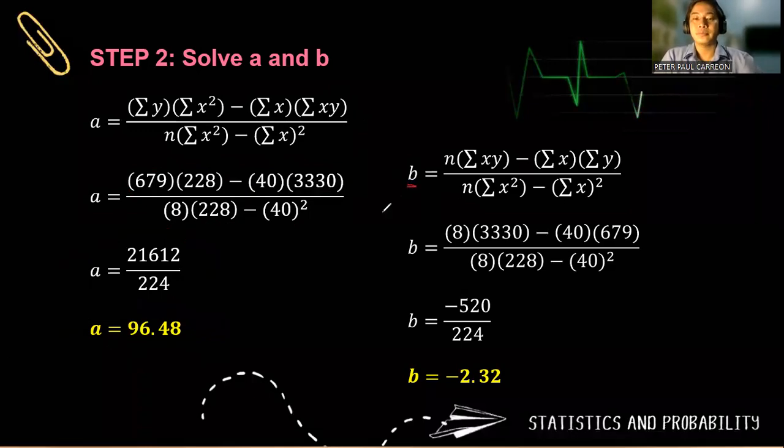And to solve for b, we have the slope, 8 times 3,330 minus 40 times 679, all over 8 times 228 minus 40 squared. So notice that the value of b became negative. It's possible to have the negative slope, meaning it is negatively correlated. So the trend line will look like this because the slope leans to the left. So our b is negative 2.33.